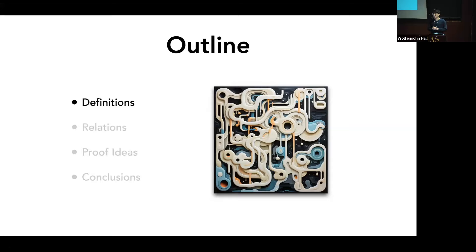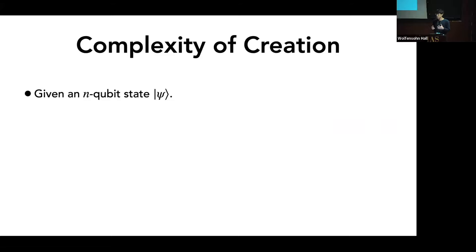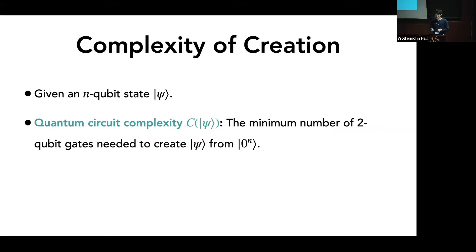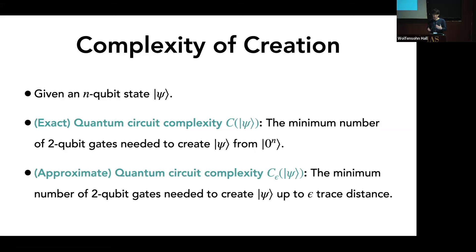Let's begin with the formal definitions. Starting with the complexity of creating a quantum state: given some n-qubit state psi, the most popular definition is quantum circuit complexity — the minimum number of elementary gates, often thought of as two-qubit gates or elements in SU(4), needed to create the quantum state psi from the all-zero state. There are two notions: exact quantum circuit complexity and approximate. Exact talks about the minimum number of elementary gates needed to create psi exactly, whereas approximate quantum circuit complexity only requires creating the state psi up to some error epsilon.